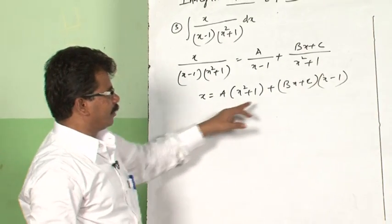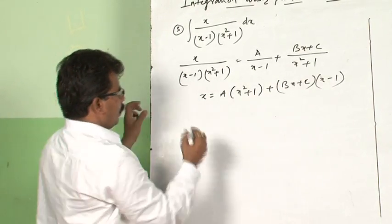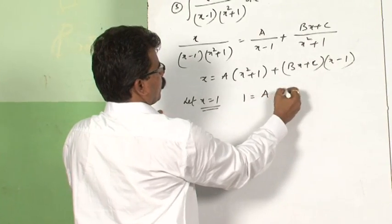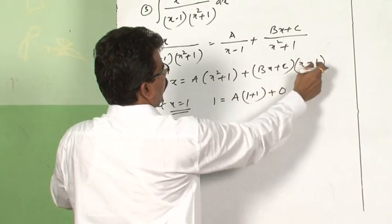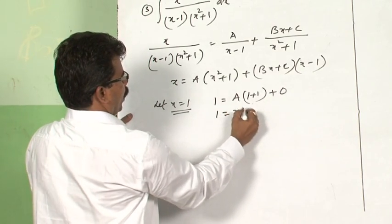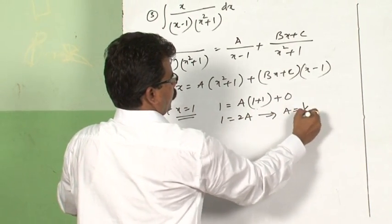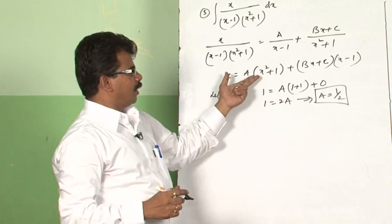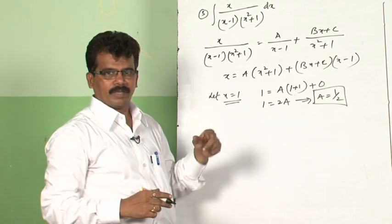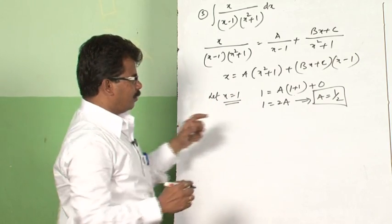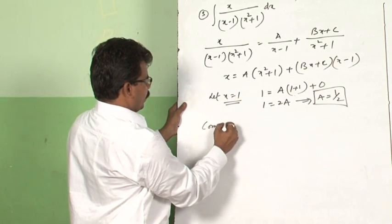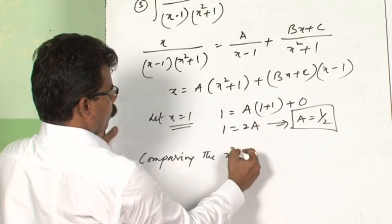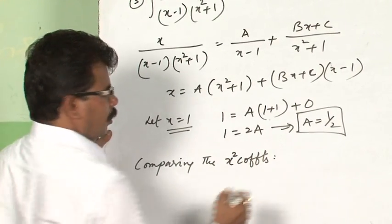Now we can easily find a value by assuming x equal to 1. Let x equal to 1. LHS is 1 equals A into (1 plus 1), and this term becomes 0 because 1 minus 1 is 0. Therefore 1 equals 2A, which implies A equal to 1/2. So you can eliminate only one term by assuming x equal to 1. You cannot get B and C by the elimination method, therefore we have to use another method — comparing the coefficients of x².